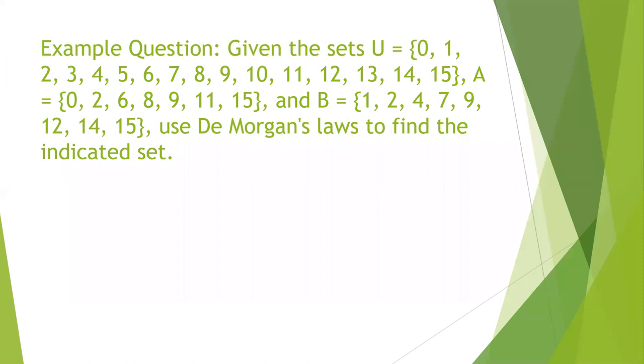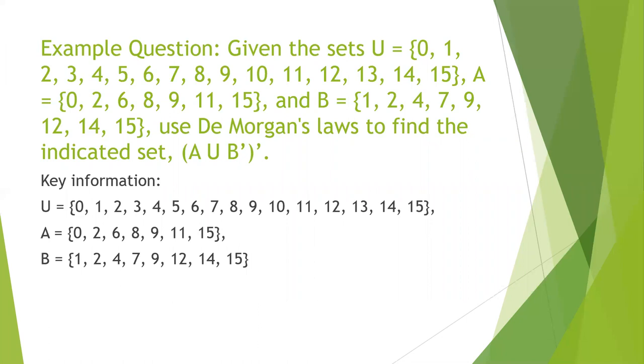And here's our problem from the beginning. So we are given our universal set. We have set A and set B, and we need to use DeMorgan's Law. So here's the key information. Here's our universal set. Here's A, and here's B. And this is what we're solving for.